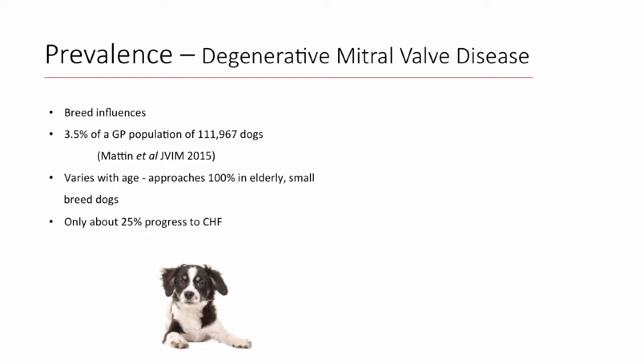Degenerative mitral valve disease is extremely prevalent. A 2015 JVIM study of 111,000 dogs estimated prevalence at about 3.5 percent, based on imaging and classic murmurs across all ages. That doesn't seem particularly high, but other studies looking at small breed dogs specifically — Cavaliers and other breeds as they age — have found that prevalence and incidence approach 100 percent as dogs near 10 years of age. Nearly all at-risk small breed dogs will develop some degree of mitral valve degenerative disease, but maybe only 25 to 30 percent will progress to congestive heart failure.